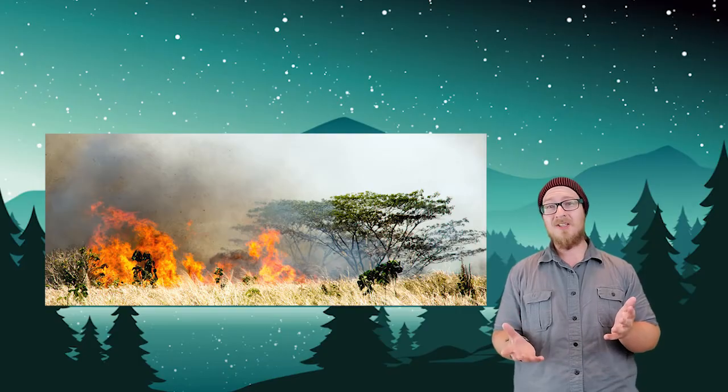Grassland ecosystems, for example, see naturally occurring fires approximately every five years. Now, we'll come back to these a little later in the video, so I want you to keep these sorts of periodic changes, especially in grassland ecosystems, in the back of your mind as we continue through this video.